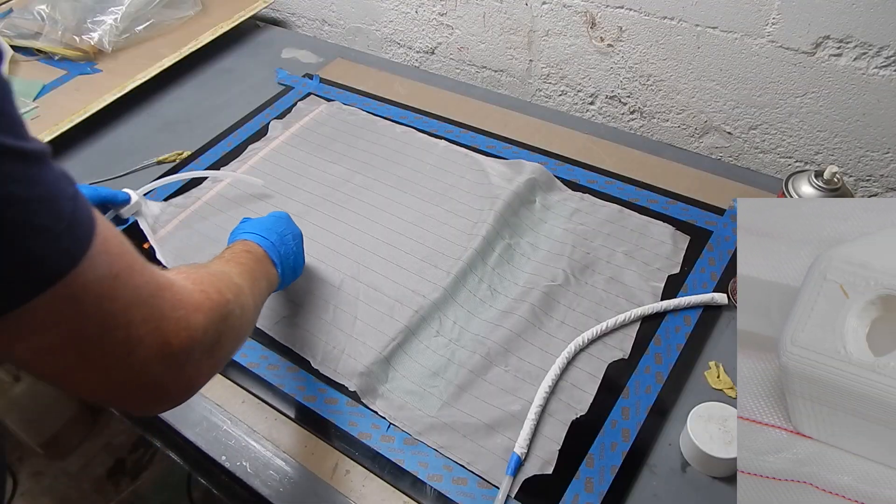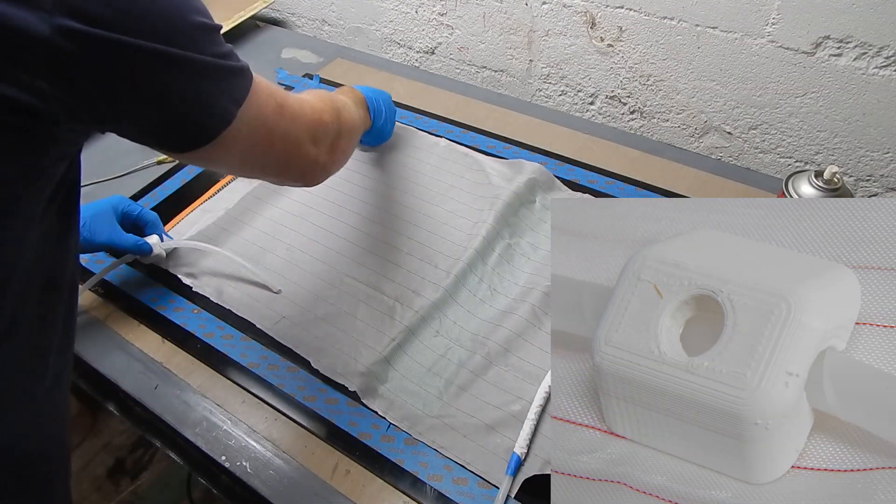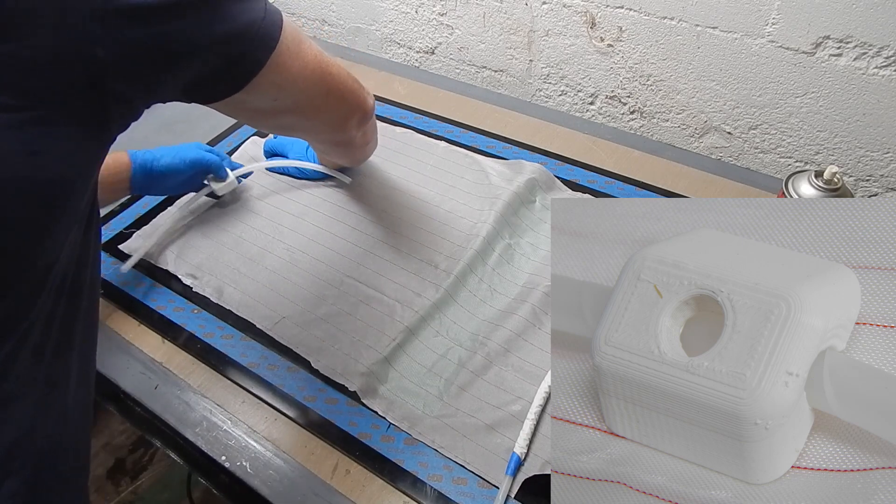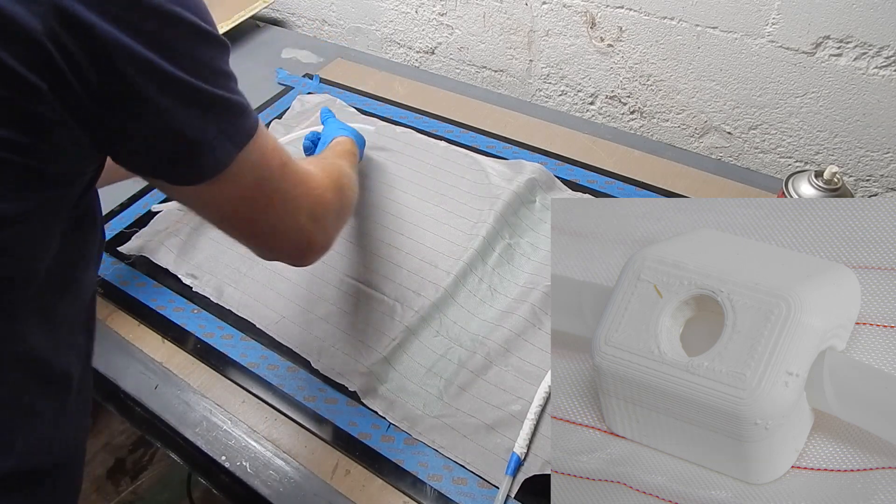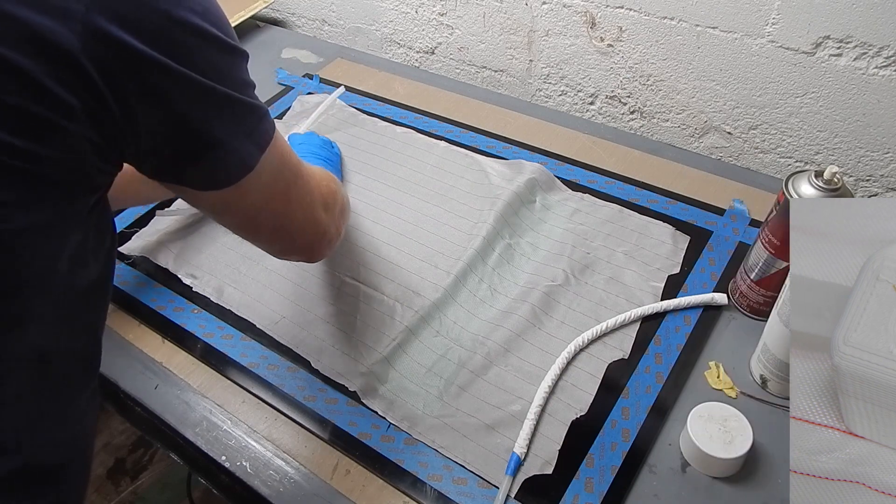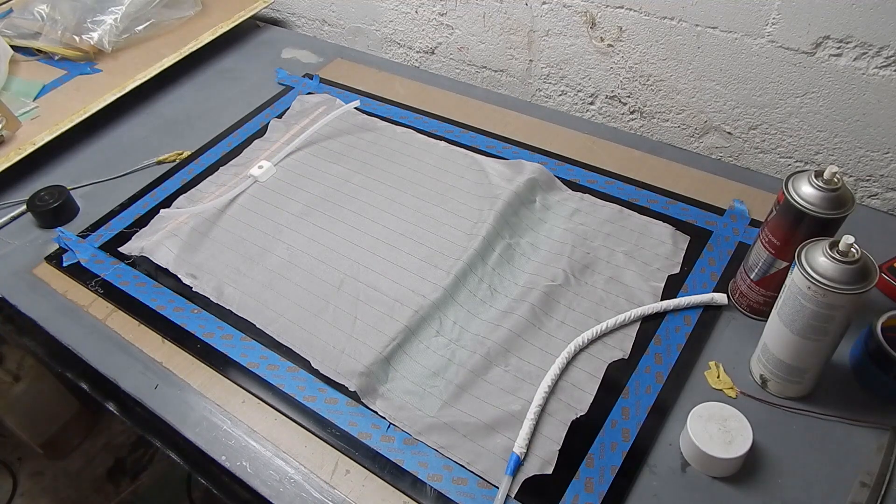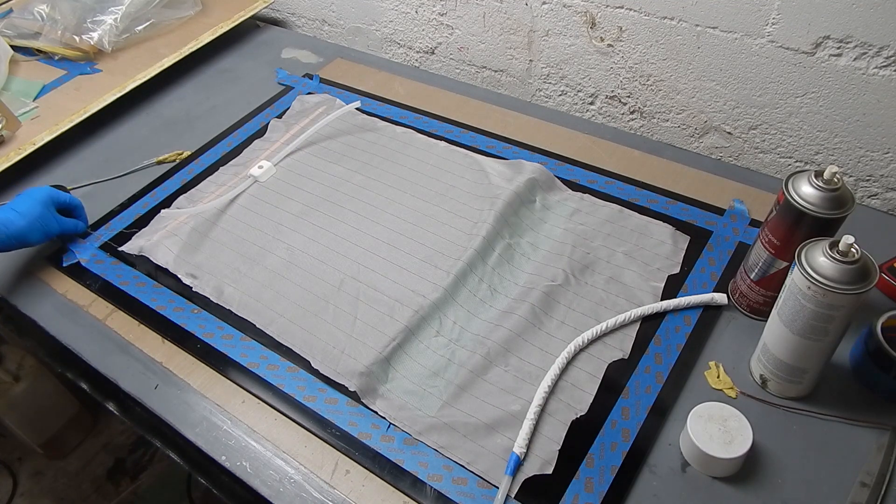On the inlet side, I'm just using this spiral wrap and a little 3D printed puck. You can get these that are reusable. This one I just made up to fit the small spiral wrap I'm using. I'm going to place that in the middle, bridging the spiral wrap, and cut some strips of peel ply here.